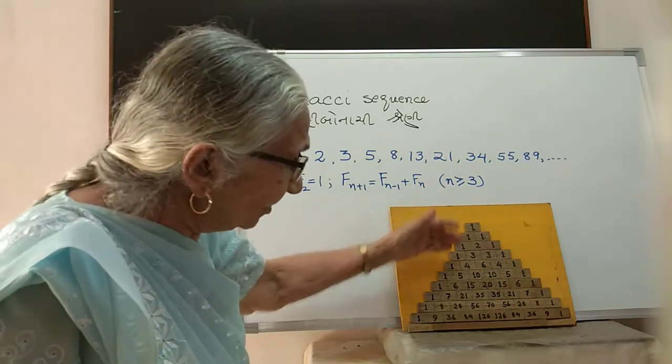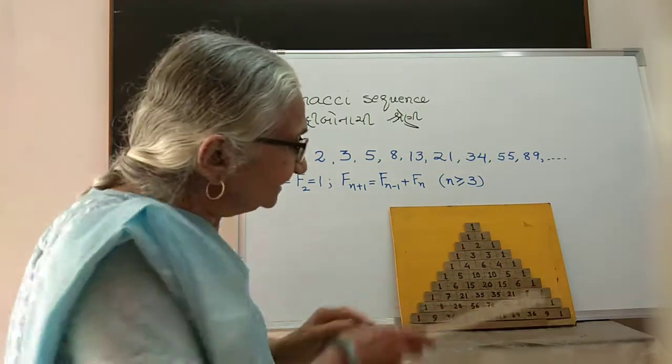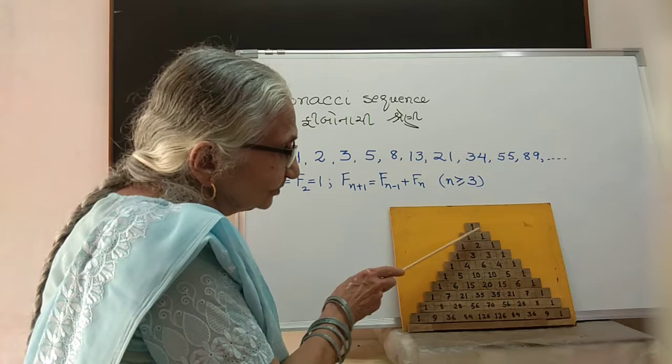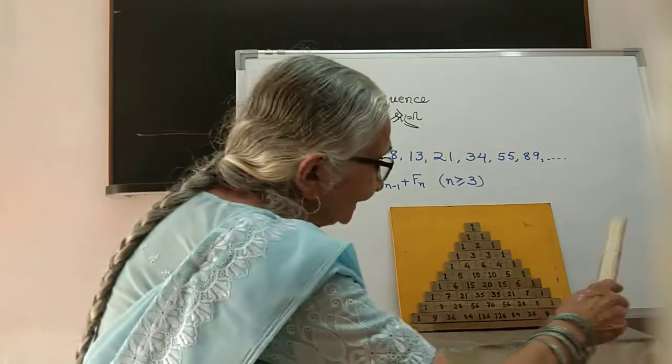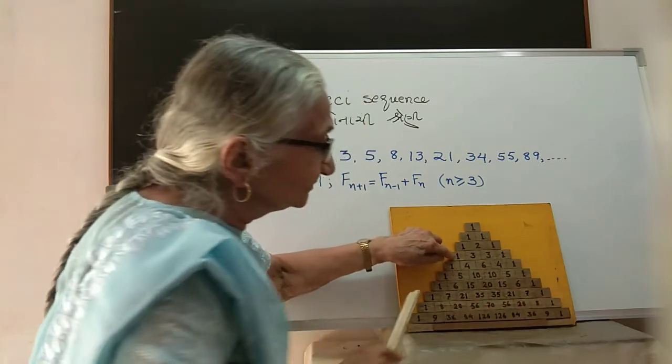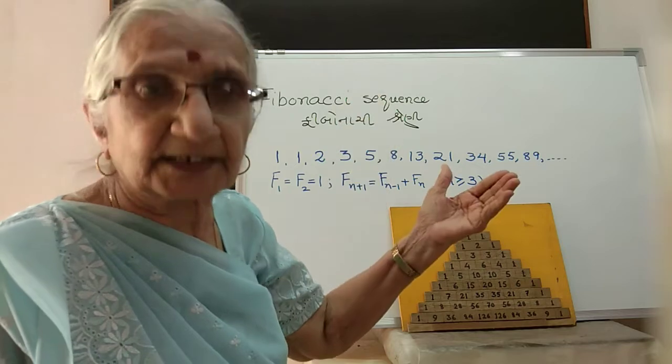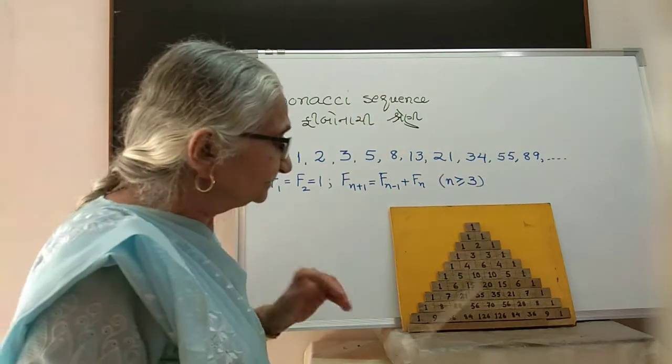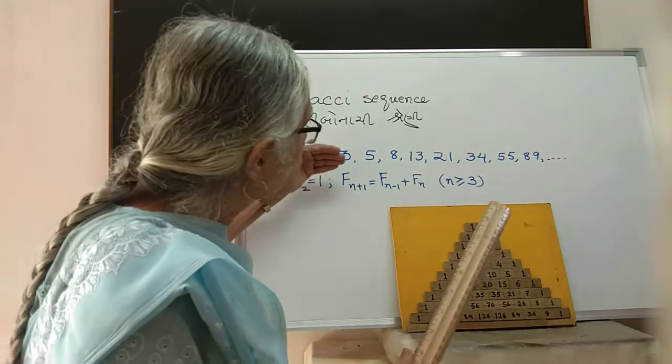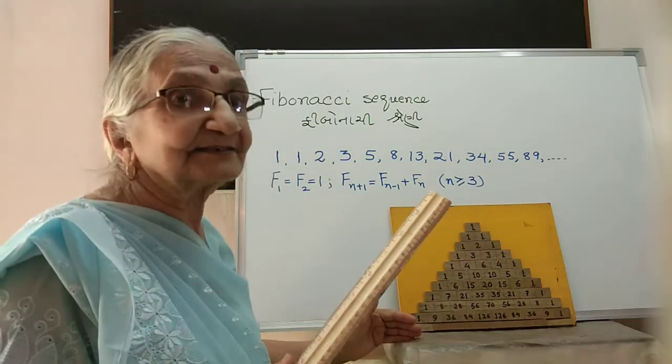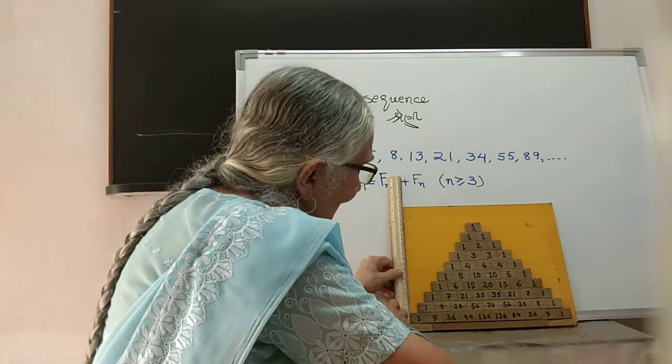I just told you that it has some relations with other numbers also in mathematics, and it is this: we all know the Pascal's triangle. The first one is 1, in the next one: 1, 1; 1, 2, 1; 1, 3, 3, 1, and so on. In any row, like 1, 3, 3, 1, it gives you the coefficients of (a+b)³ in the expansion.